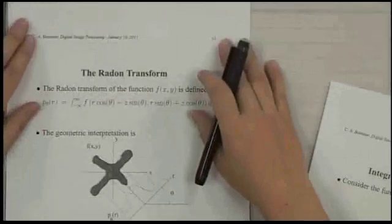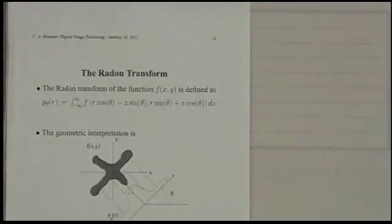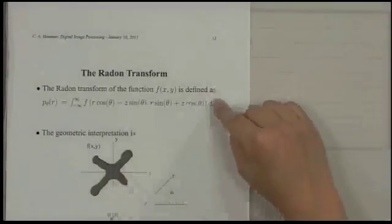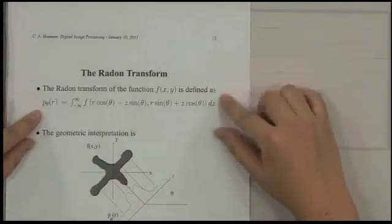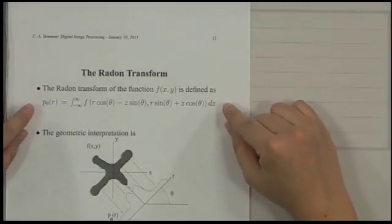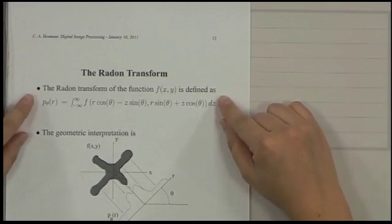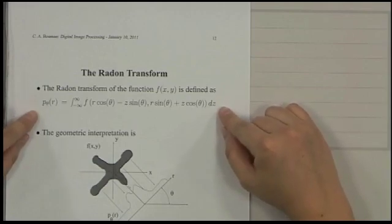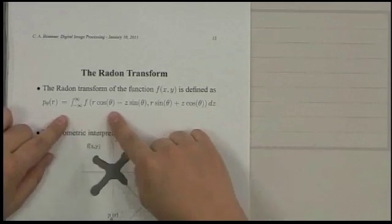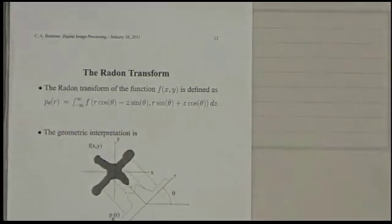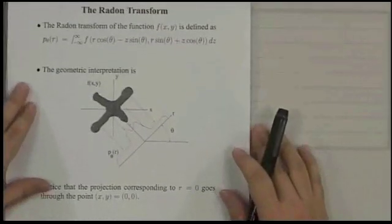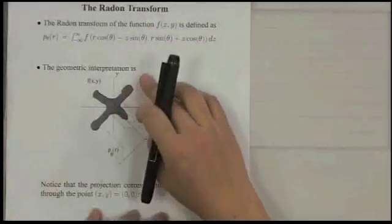And here is the next page, but this is the same equation. So the Radon transform of the function, so projection of the function is defined as p_theta(r). And the equation can be written like this.